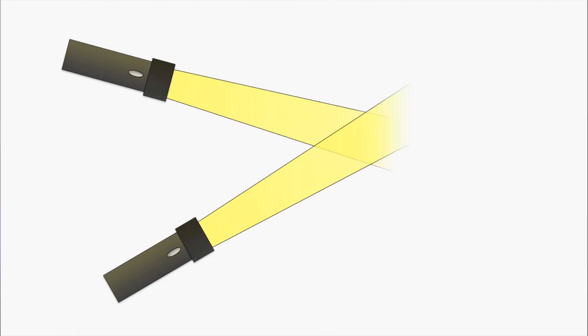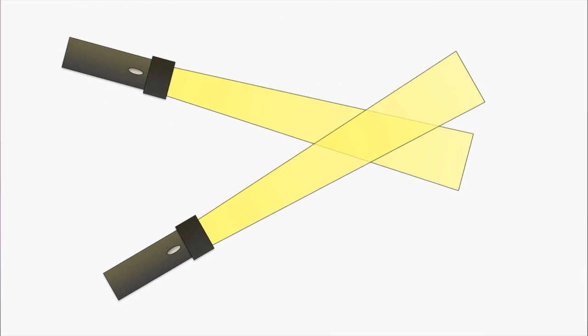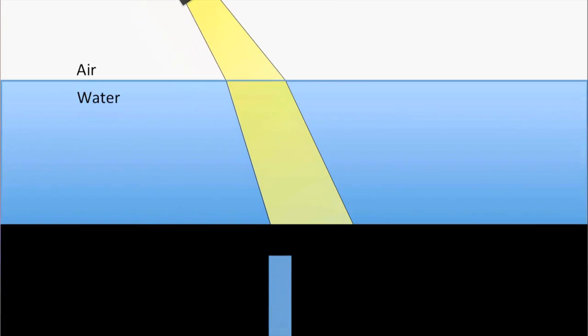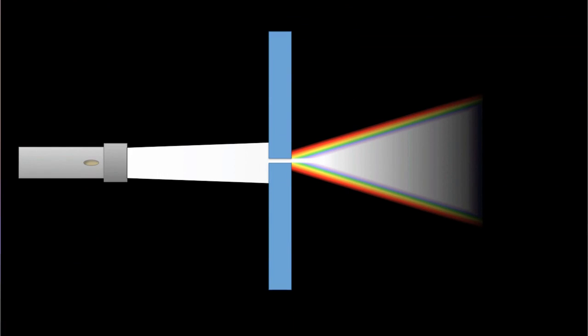However, beams of light that pass through each other come out unchanged. Light can refract, changing direction as it moves from one material to another. It can also diffract as it passes through small openings.